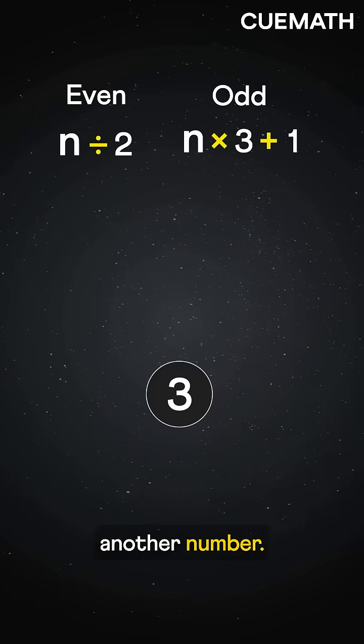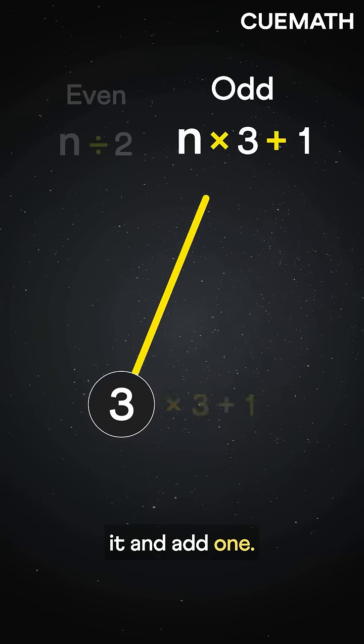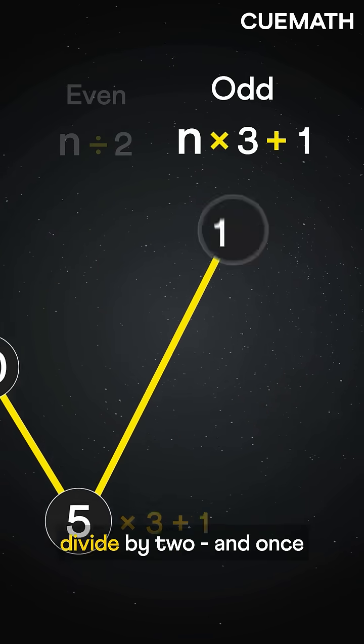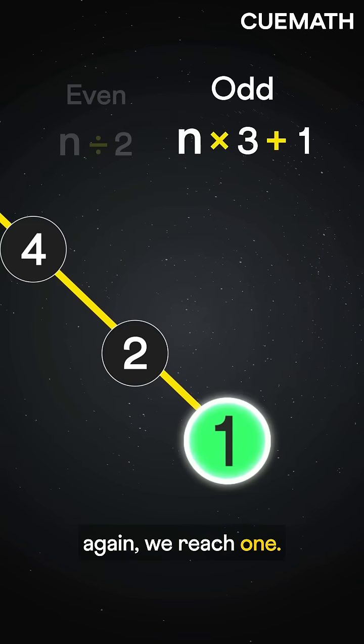Let's try another number. If it's odd, we triple it and add one. If it's even, we divide by two. Triple plus one, divide by two, and once again, we reach one.